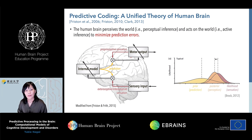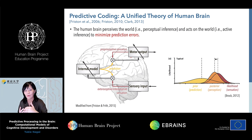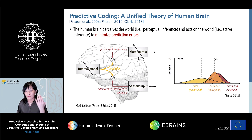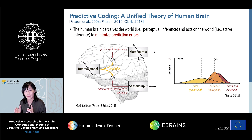It has also been suggested that the process of integrating the two signals — top-down predictions and bottom-up sensations — follows Bayesian inference. This means that both the prior and the sensory signals are perceived with some uncertainty, and the brain perceives the world based on the means and variances of the prior signals and the sensory signals. So when sensory signals are relatively accurate, the posterior perception is biased toward the sensations.